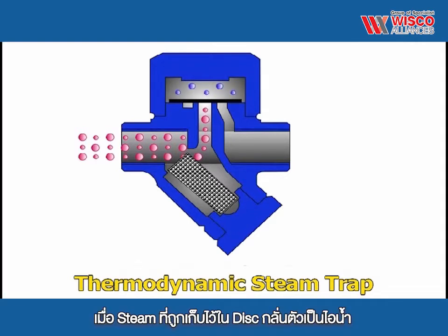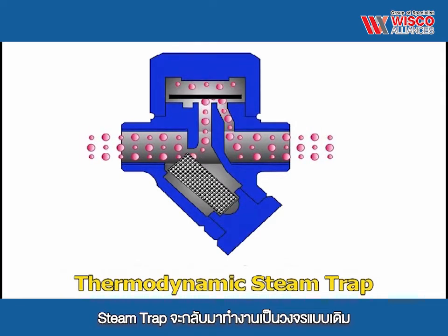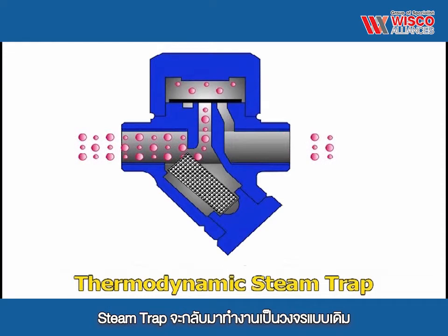When the steam which is keeping the disc closed condenses, the trap opens and the cycle repeats itself.